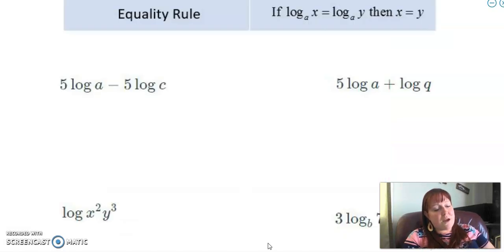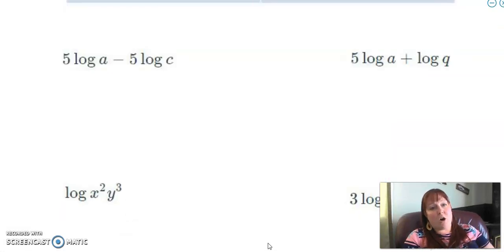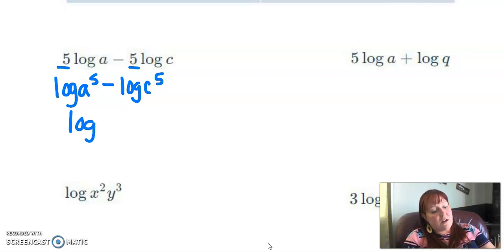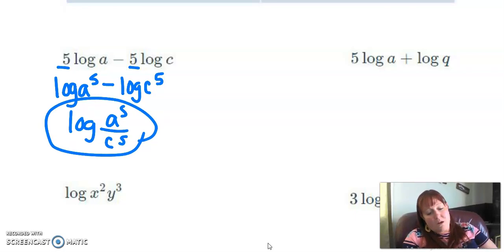Okay, so let's write this one as one log altogether. So the first thing I noticed is I have these five out front, which makes me think that they are probably going to be exponents. So I have a to the fifth minus log c to the fifth. And then this is subtracting, so now I have log a to the fifth over c to the fifth. And both of those are inside my log.